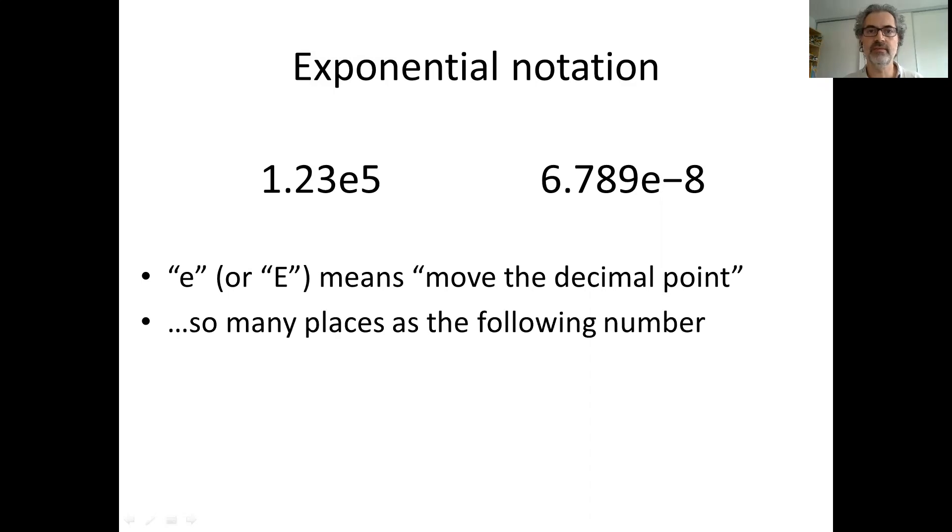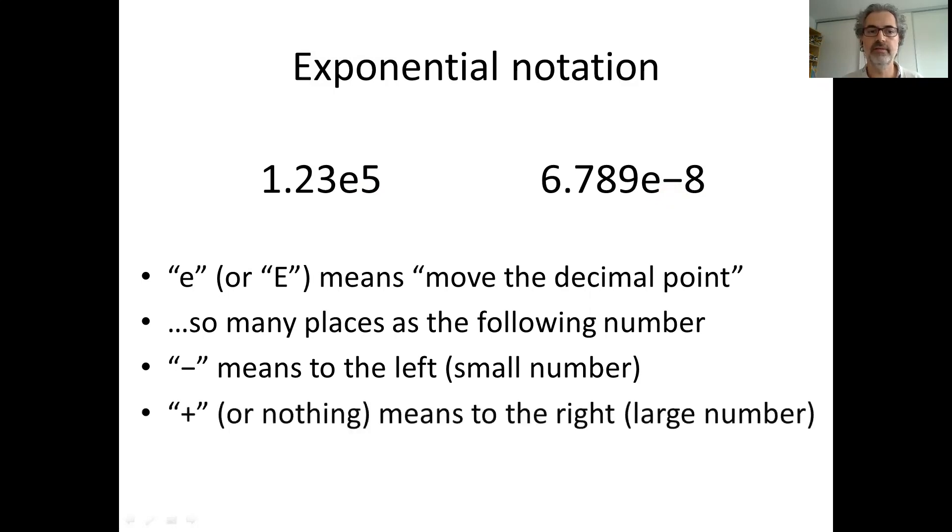You should move the decimal point as many places as the following number—so five places here or eight places here. If there is a minus sign, like here, then you should move it to the left, so you end up with a very small number. If there is a plus sign or nothing, like here, then you move it to the right, so you end up with a very large number.